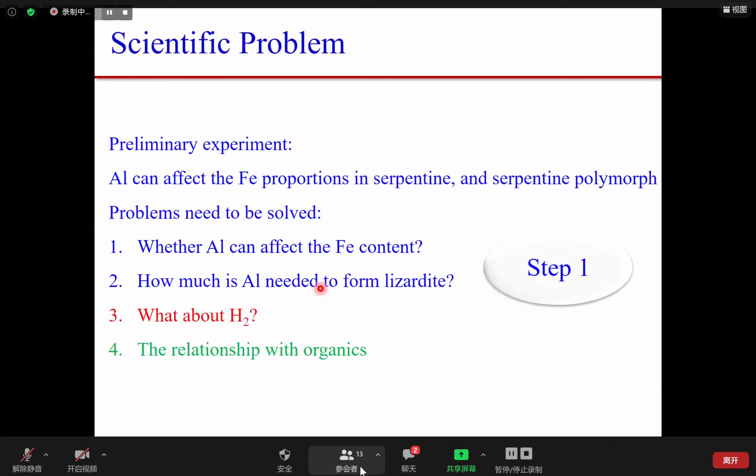Based on this, since this is just one of my experiments and it hasn't been published from other studies, this project is trying to figure out if this is true - whether aluminum can affect the iron content in serpentine, and if so, how much aluminum is needed to form lizardite. The hydrogen production and relationship with organic formations is for further studies.